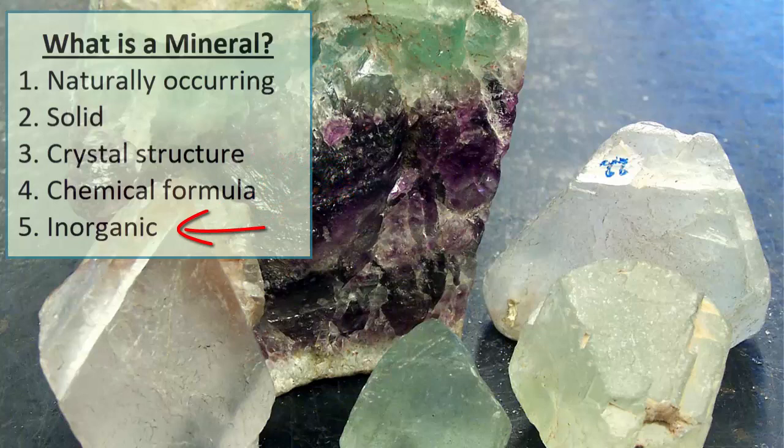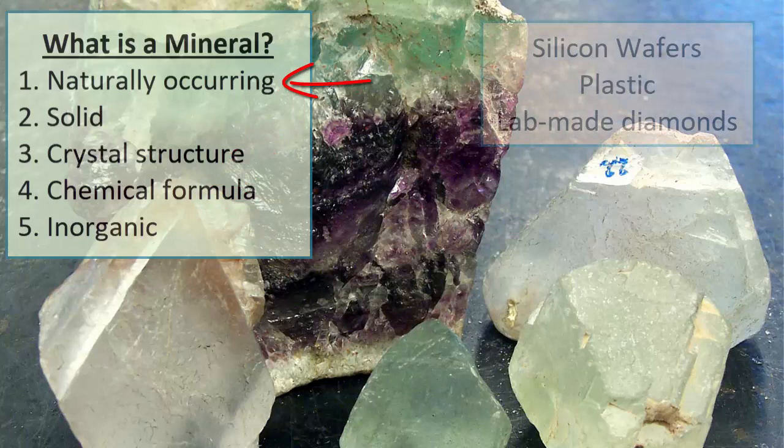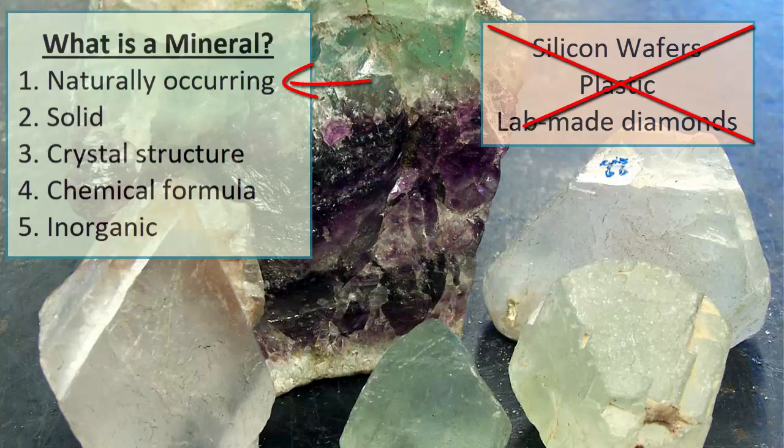The first of these, naturally occurring, means that human-made substances like silicon wafers, plastics and lab-made diamonds are not technically considered minerals. Because they are human-made, we won't see them in rocks, although future geologists might.